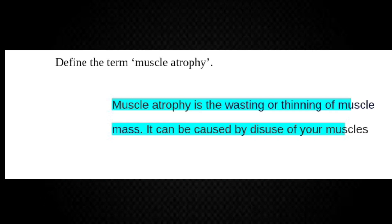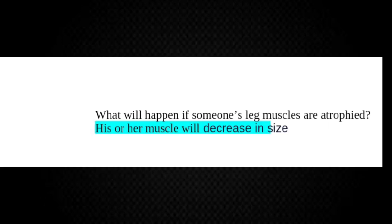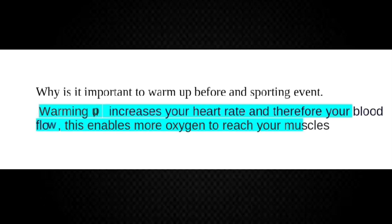Define the term muscle atrophy. Muscle atrophy is the wasting or thinning of muscle mass. It can be caused by disuse of your muscles. If someone's leg muscles are atrophied, their muscles will decrease in size — they basically shrink.